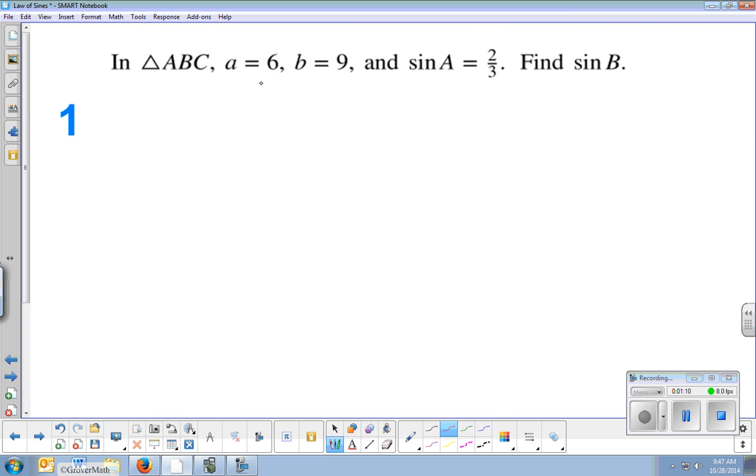So in triangle ABC, A equals 6, B equals 9, sine A equals 2 thirds, find sine B. Well it's going to be A over sine A equals B over sine B. So let's just plug in what we have. That's going to be 6 over sine A. Now again, this is what we saw in the area of the triangle formula that there's a difference between giving me sine A and angle A. If they say angle A is 20 degrees, I'd be writing sine 20. But if they give me sine A is 2 thirds, then I just put in 2 thirds. I don't put sine 2 thirds. Are they giving me the angle or are they giving me the function of the angle? And so I just put 2 thirds because they're giving me the function here.